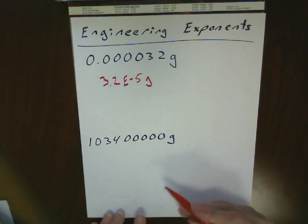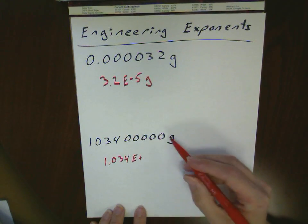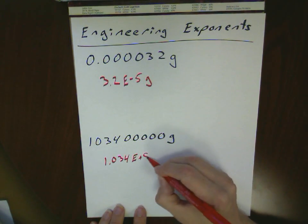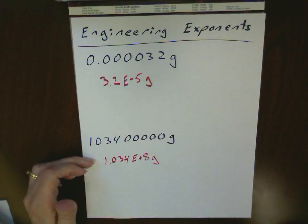And for our large number here, this is going to be 1.034e to the plus 1, 2, 3, 4, 5, 6, 7, 8 grams. So we have a very small number here and a very large number here.